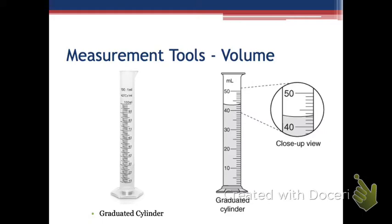The same rule applies here: if my graduated cylinder is measured to the whole number, I would estimate to the tenths place. So when I read this graduated cylinder, I might call it somewhere around 91 to 92.5 — I only get to have one decimal place as my estimate. Now if we look at the one on the right, what is it measured to?